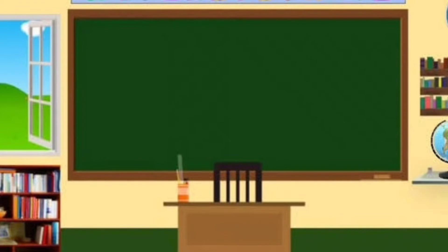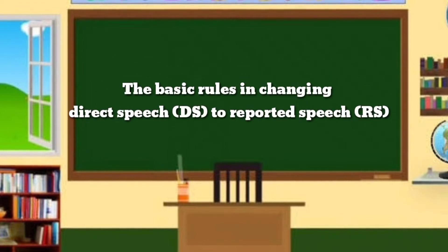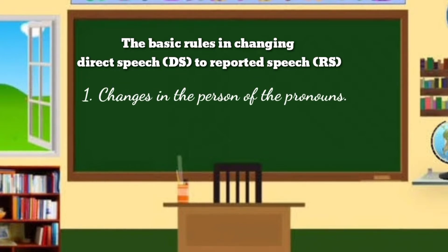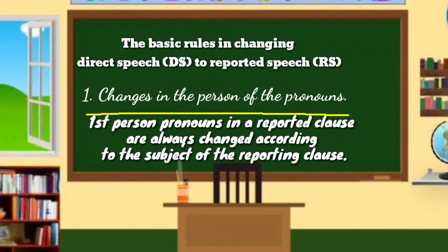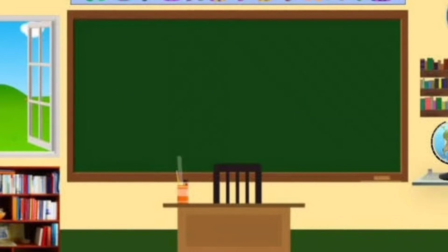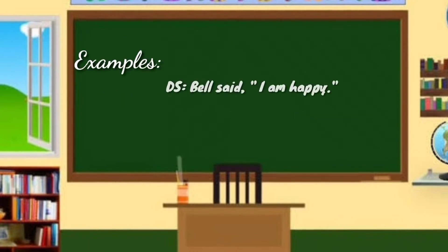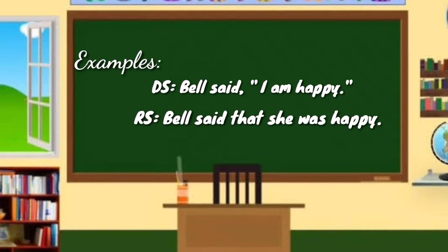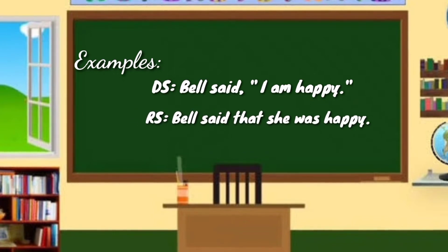Now let's proceed to the basic rules in changing direct speech (DS) to reported speech (RS). First: changes in the person of the pronouns. First person pronouns in the reported clause are always changed according to the subject of the reporting clause. For example — DS: Bell said, 'I am happy.' RS: Bell said that she was happy.